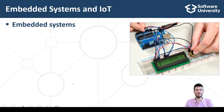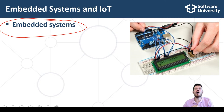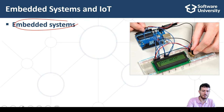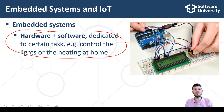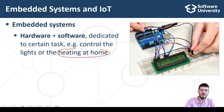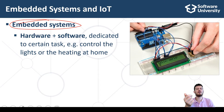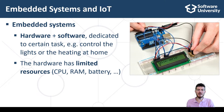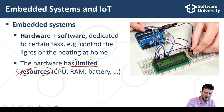Embedded systems and Internet of Things are a broad branch of software development. An embedded system is hardware and software dedicated to certain tasks, such as controlling the lights or the heating at home. They are called embedded systems because they are often embedded in bigger hardware products such as air conditioners, automated heating systems, automatic watering systems, and cars. Typically embedded systems use hardware with limited resources — CPU, RAM, battery, and others.